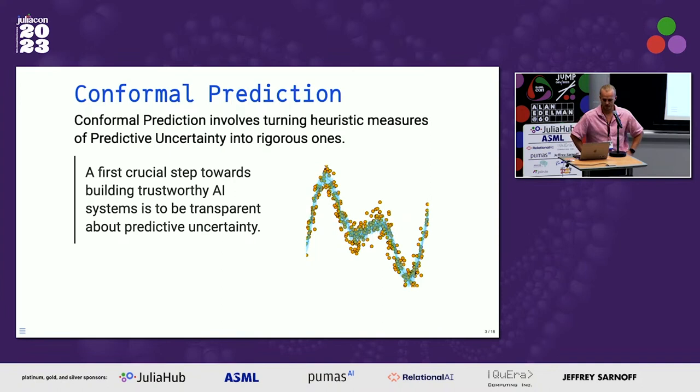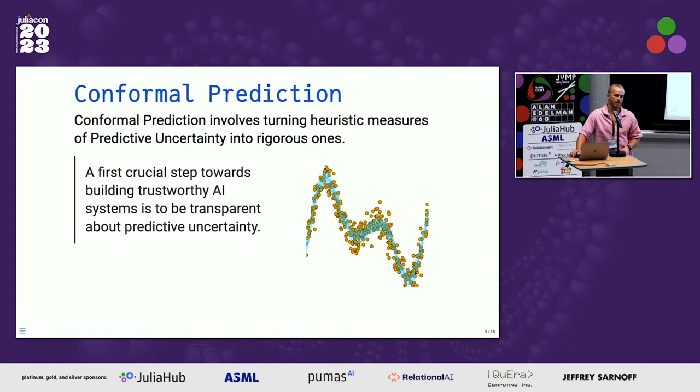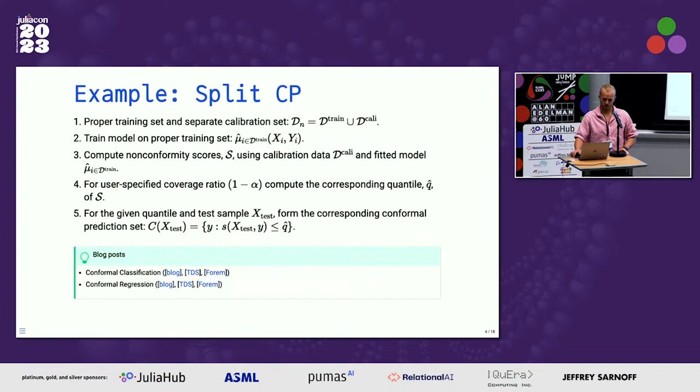What is conformal prediction? It involves turning heuristic notions of predictive uncertainty into rigorous ones. I'm motivated to work on this because if we want to build trustworthy AI systems, as a minimum requirement in the context of machine learning, knowing how certain or uncertain the model is about its predictions is kind of the holy grail.